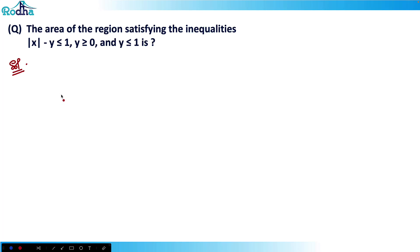Hi guys, so let's look at this next question from CAT 2020 slot one. It says that the area of region satisfying the inequalities |x - y| ≤ 1, y ≥ 0, and y ≤ 1 is what?